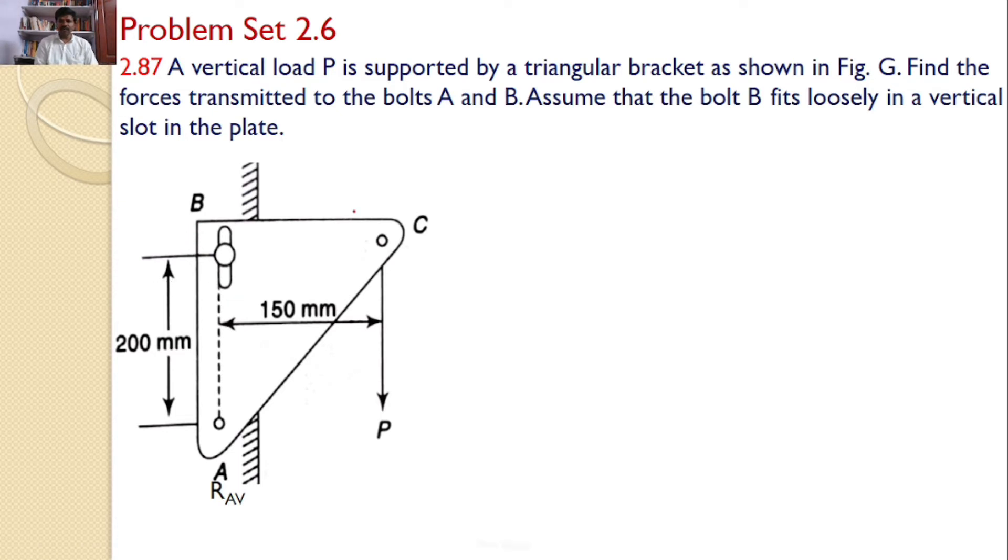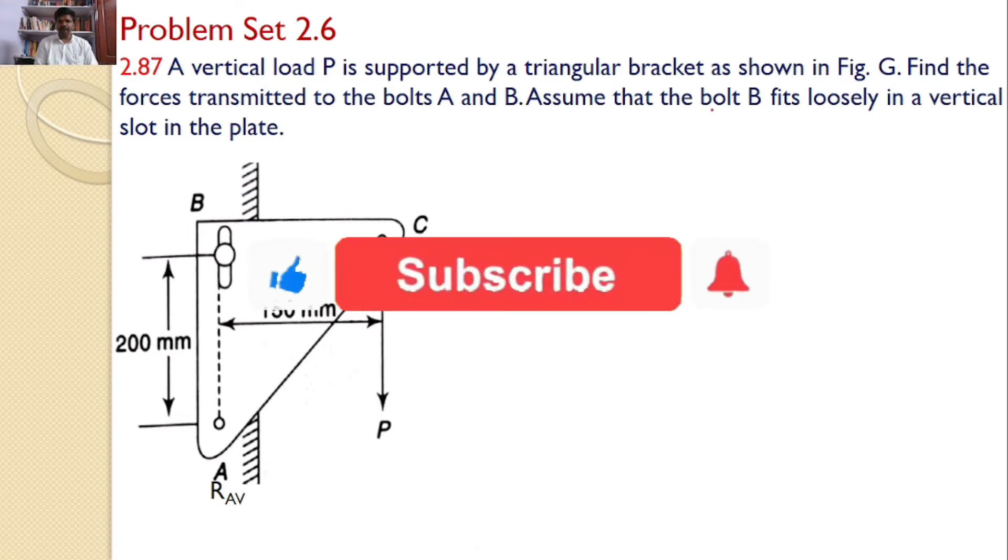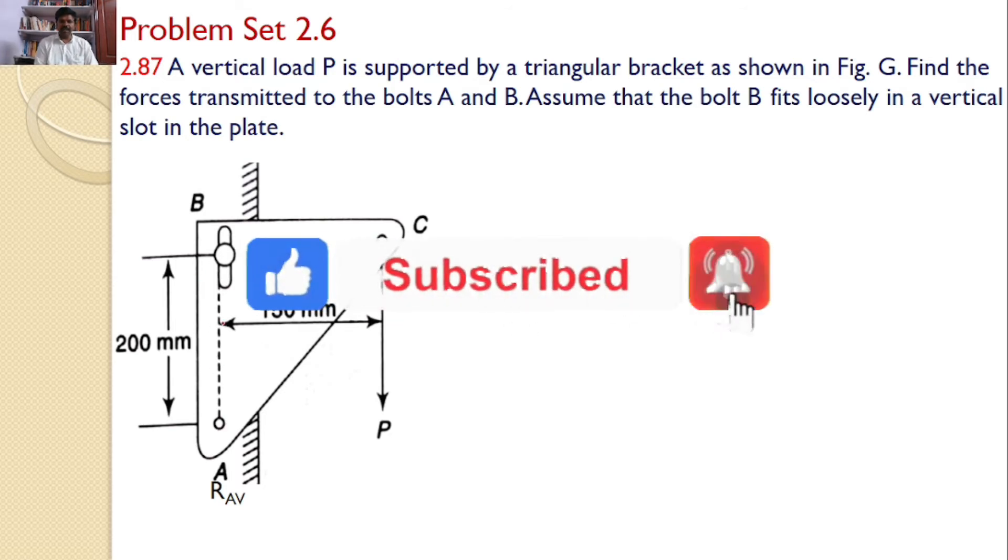Now, our interest is to find the reaction forces at A and B. For that, let us consider the free body diagram of the triangular bracket. The various forces include the applied force P, which is at a distance of 150 mm from the line joining the bolts A and B.